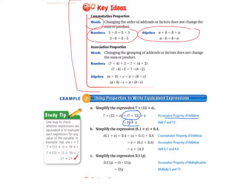Now we're going to simplify the expression 6.1 plus x plus 8.4. We're going to use the commutative property of addition to change the order of things — we move the 8.4 and the 6.1 so they're next to each other. Then we change the grouping so the parentheses are around 6.1 and 8.4, add those to get 14.5, and our simplified expression is x plus 14.5.